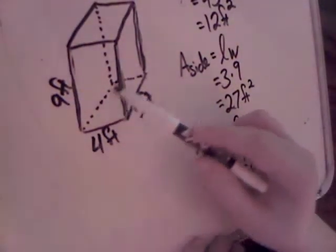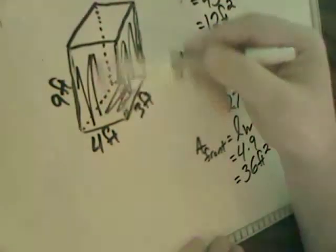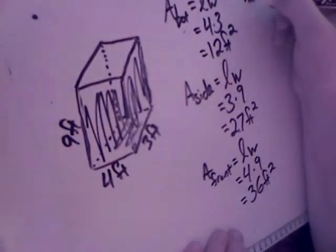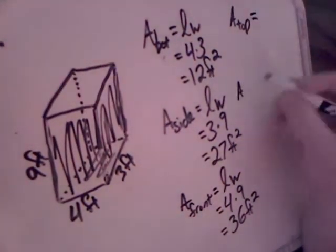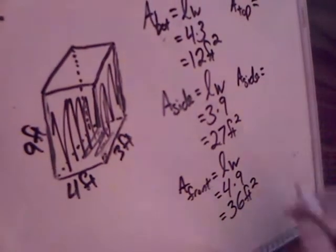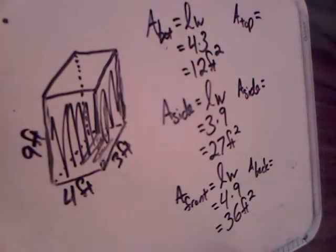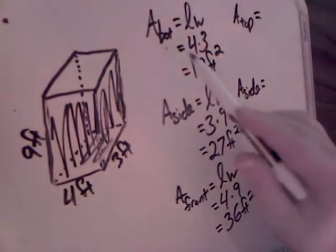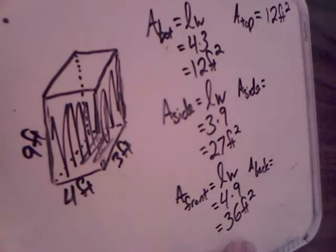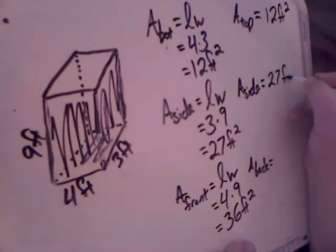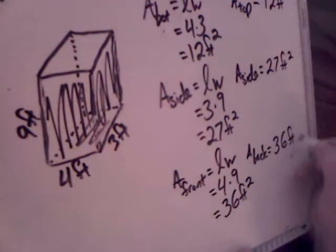So now I have the bottom, the side, and the front. I don't have the top, the other side, and the back. The good thing is that I don't have to find anything new. The bottom was 12 feet squared, so the top is going to be 12 feet squared as well. The one side was 27 feet squared, so the other side is going to be 27 feet squared. The front was 36 feet squared, so the back is going to be 36 feet squared.